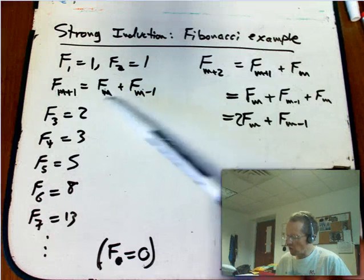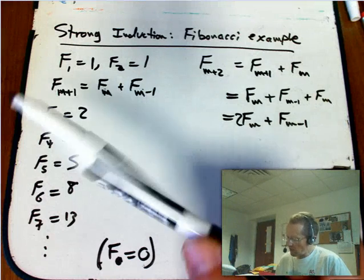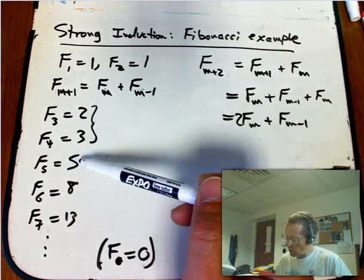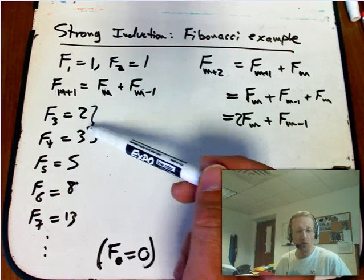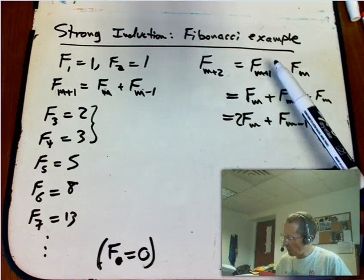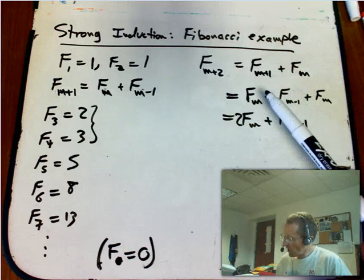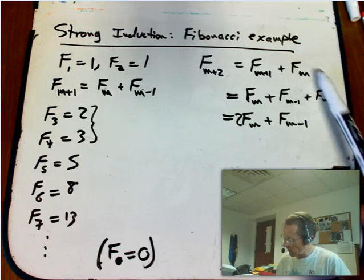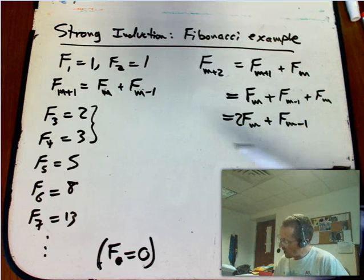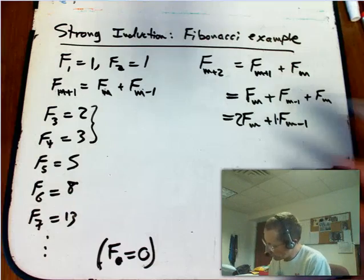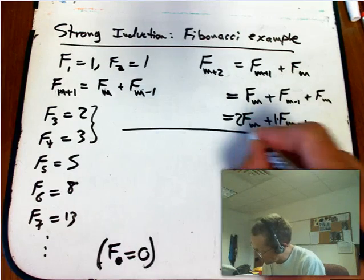But I want to get it in terms of F sub M and F sub M minus 1, so I want to see it in terms of these guys. So I'm thinking that the knowledge I have is like the 2 and the 3 here, and I want to predict not what the next one is, but what this guy is. What is this in terms of these two numbers? Well, I'm just going to use Fibonacci again. F M plus 1 is F M plus F M minus 1, and then plus the F M that was already there. So I get 2 F M plus, and I'm going to put in explicitly 1 times F M minus 1.